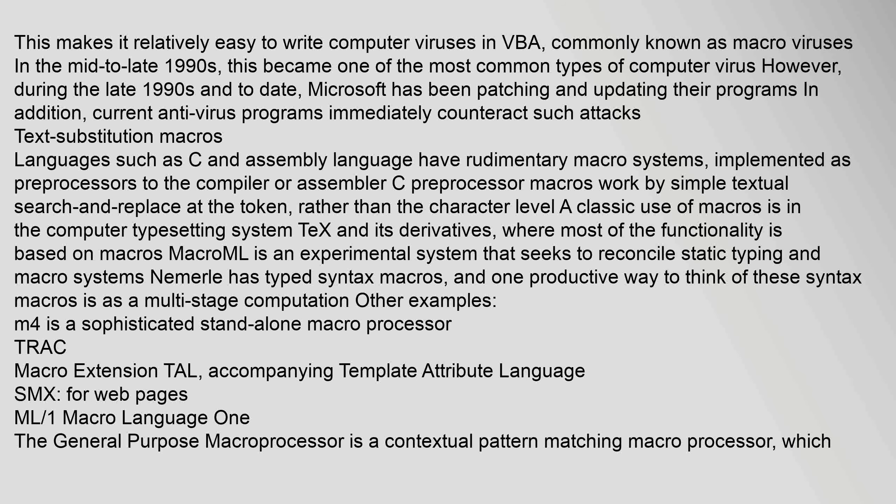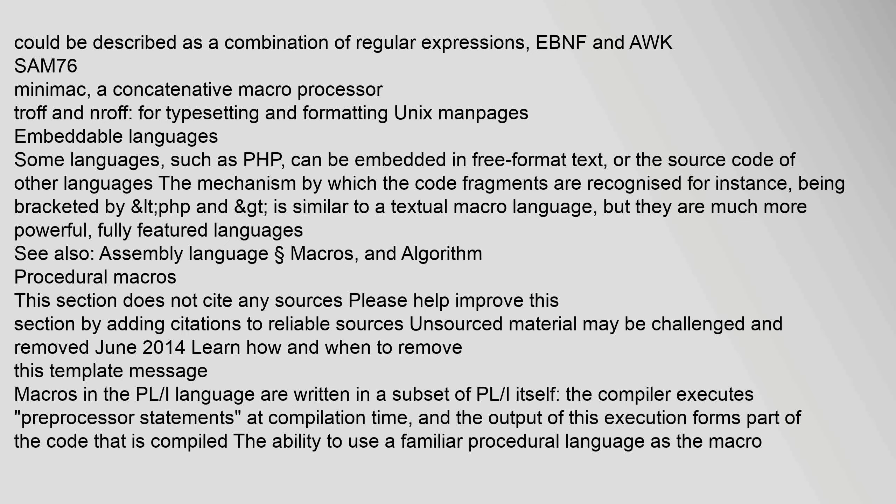Languages such as C and assembly language have rudimentary macro systems implemented as pre-processors to the compiler or assembler. C preprocessor macros work by simple textual search and replace at the token level. A classic use of macros is in the computer typesetting system TeX and its derivatives, where most of the functionality is based on macros. Other examples include M4, a sophisticated standalone macro processor; TROFF macro extension TALL; SMX for web pages; ML/1 Macro Language 1; and the general purpose macro processor, a contextual pattern matching macro processor combining regular expressions, EBNF, and OC; as well as SAM76, MINIMAC, and NROFF and TROFF for typesetting and formatting Unix man pages.